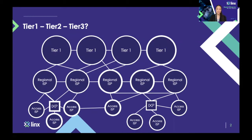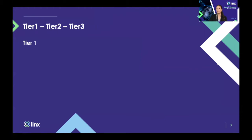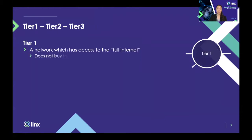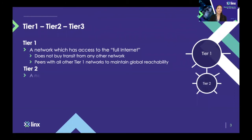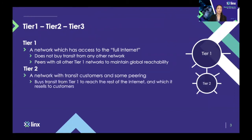Let's start with a Tier 1 provider. A Tier 1 provider is generally a large international network that has access to the full internet — through its own network but also by peering, exchanging traffic with other large Tier 1 providers. A Tier 1 provider does not have to pay another party to reach parts of the internet because it's in the business of selling access to the internet to a smaller provider.